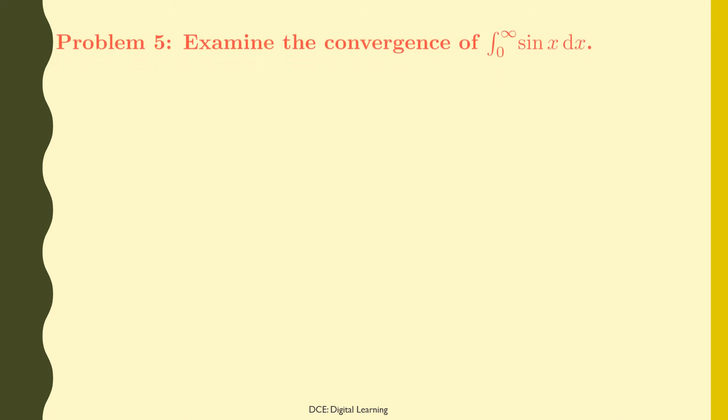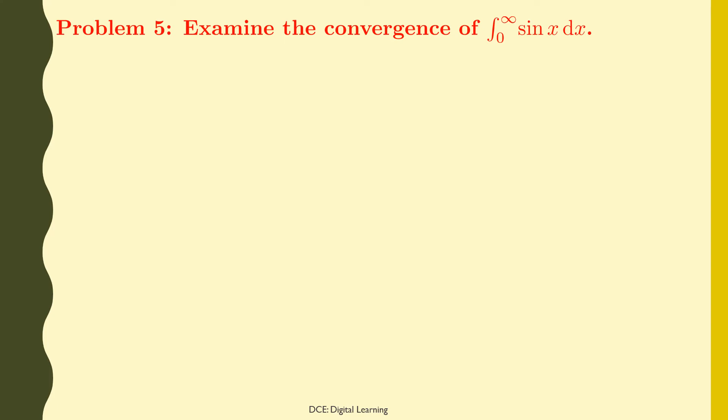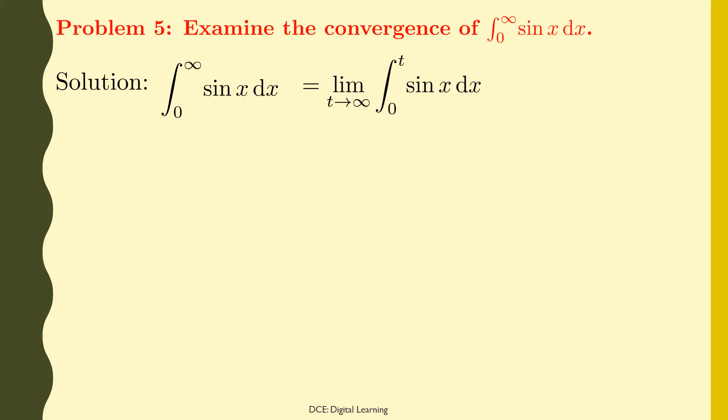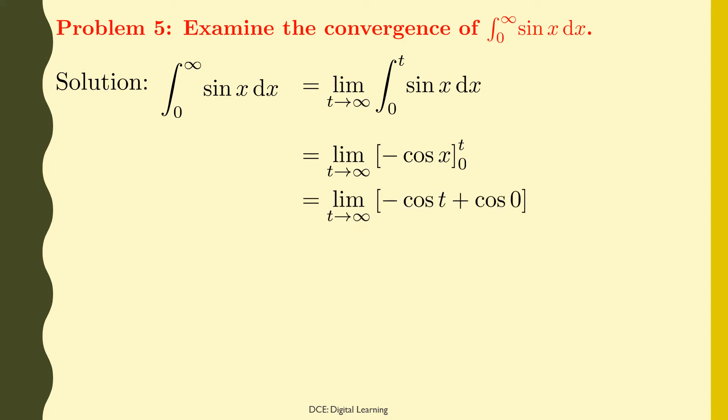Problem 5. Examine the convergence of the integral of sin(x) dx from 0 to infinity. Solution. The given integral, integral of sin(x) dx from 0 to infinity, is an improper integral of first kind as the upper limit is infinity. So by definition, this equals the limit of the integral of sin(x) dx from 0 to t as t tends to infinity. On integration, this equals the limit of −cos(x) from 0 to t as t tends to infinity, which equals the limit of −cos(t) + cos(0) as t tends to infinity.